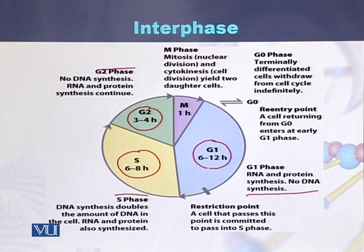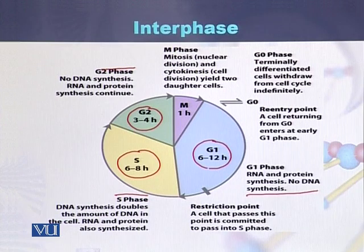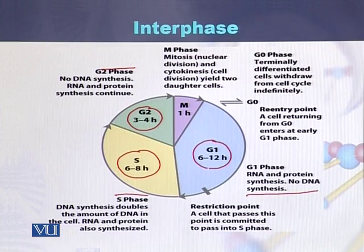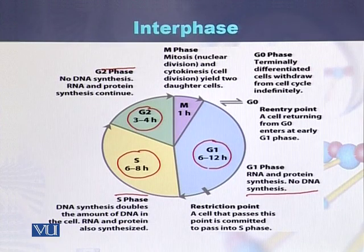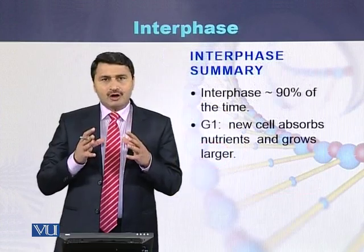While in case of G2 phase, there is no DNA synthesis, but RNA and protein synthesis continues. So interphase consists of three stages: first G1 where there is no DNA synthesis, then S stage where DNA replicates, and the third stage G2 where there is no DNA synthesis but there is synthesis of RNA and proteins.